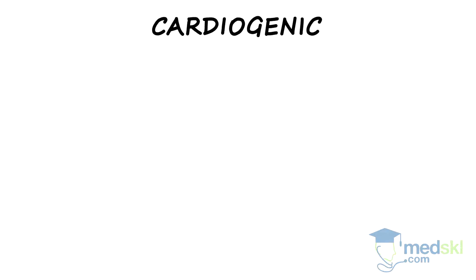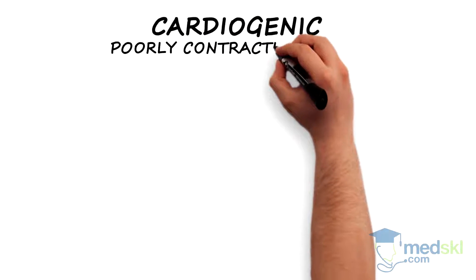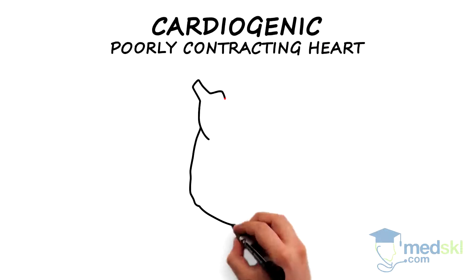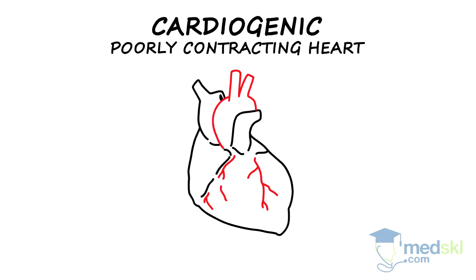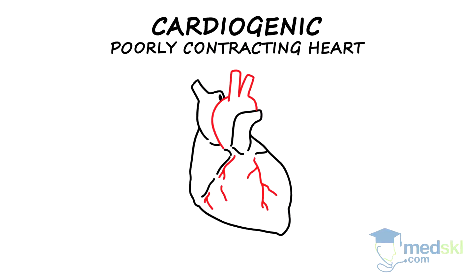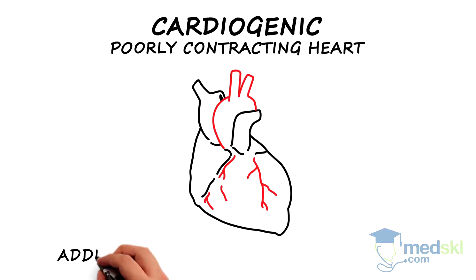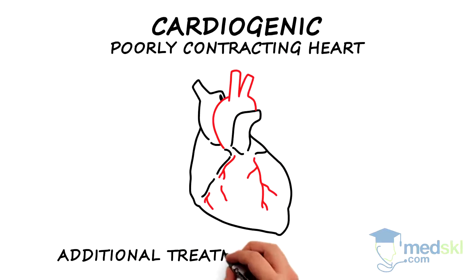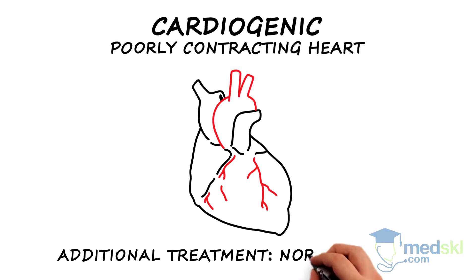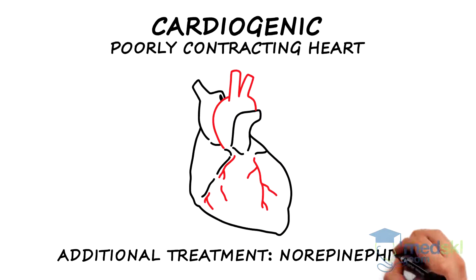Cardiogenic shock results from a poorly contracting heart due to an injury to the heart muscle or disorganized cardiac contractions. Treatments include medications such as norepinephrine, which increases heart contractility and afterload while constricting blood vessels.